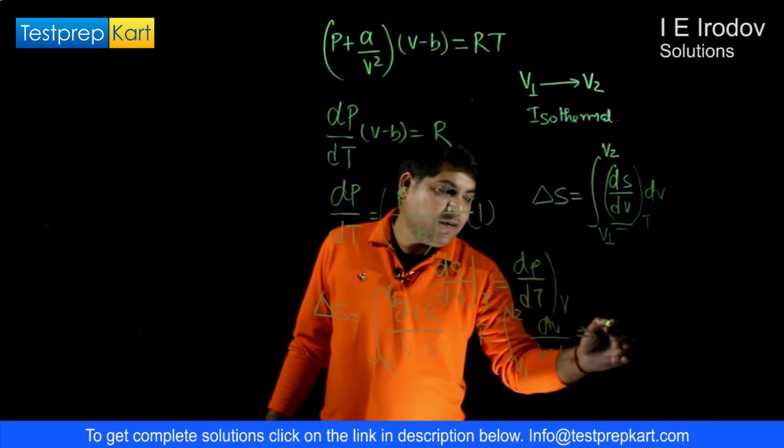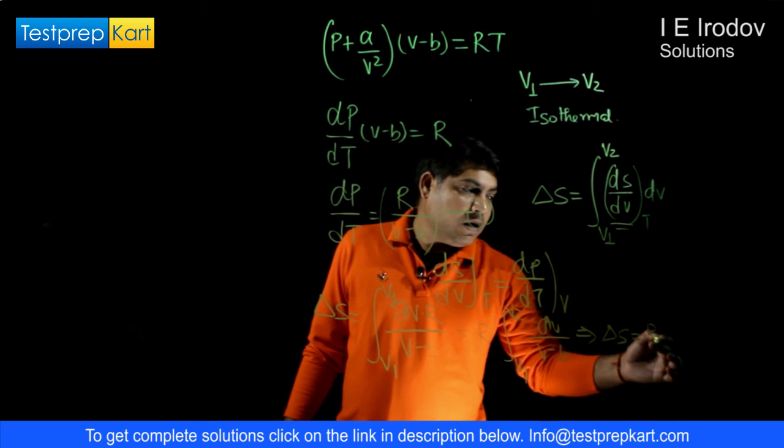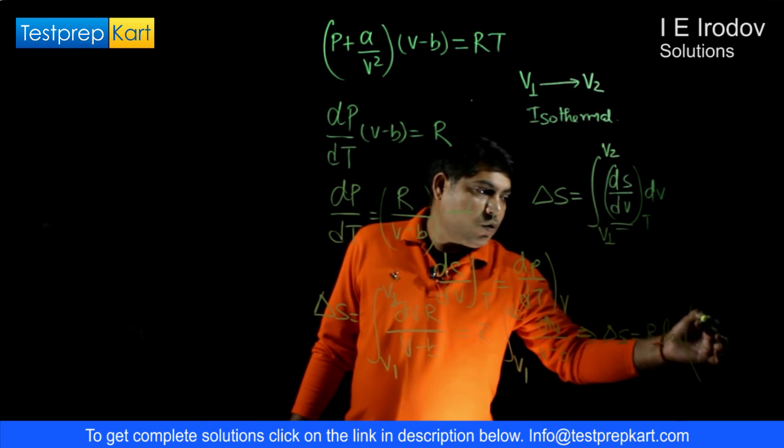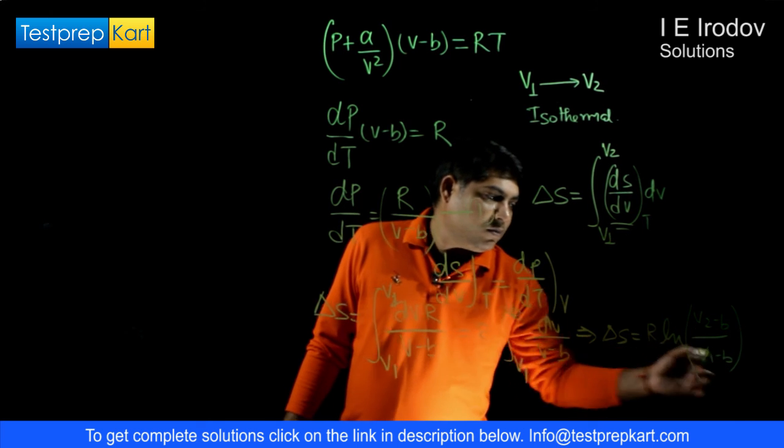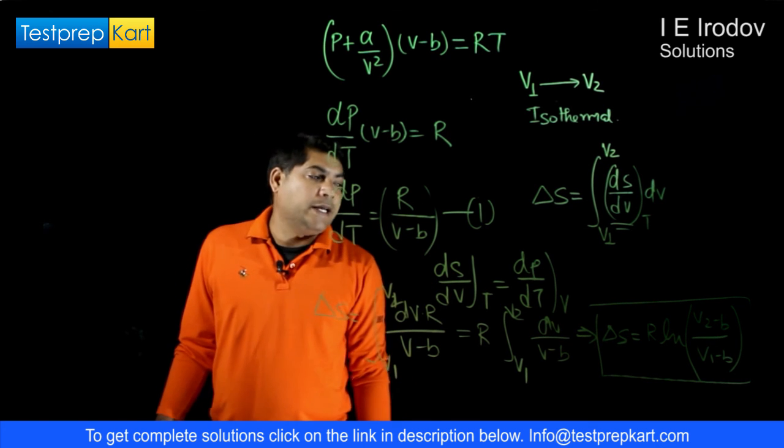So from here we will get increment in entropy equals R times ln[(V2 - b)/(V1 - b)]. So this is the increment in entropy of this Van der Waals gas.